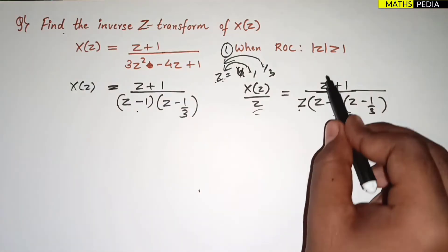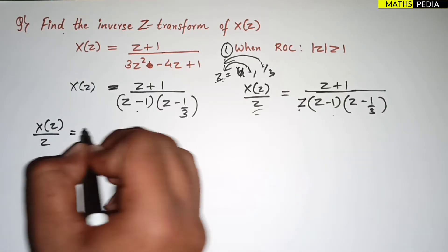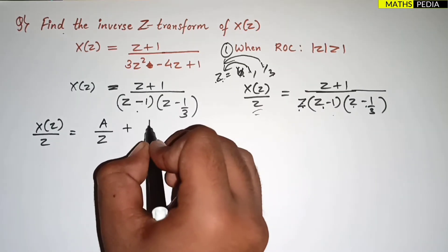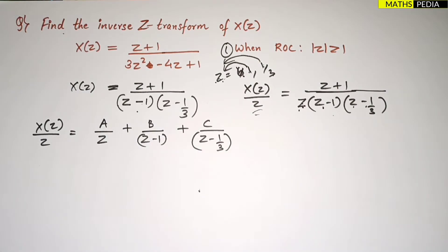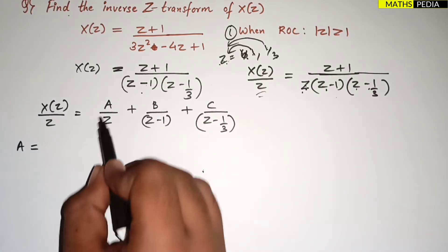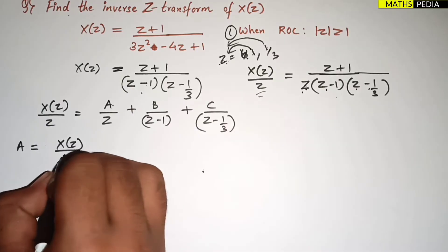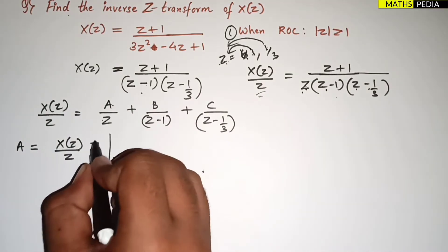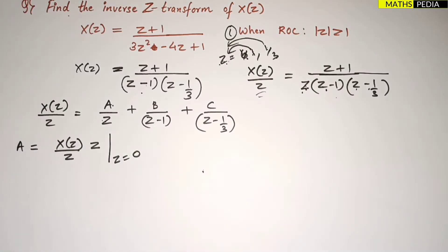Now we proceed to partial fractions. We write X(z)/z = A/z + B/(z - 1) + C/(z - 1/3). To find A, multiply both sides by z and substitute z = 0 so that the z term becomes zero. Don't substitute before cancelling, otherwise you get a 0/0 form. Cancel the z terms first, then substitute z = 0.